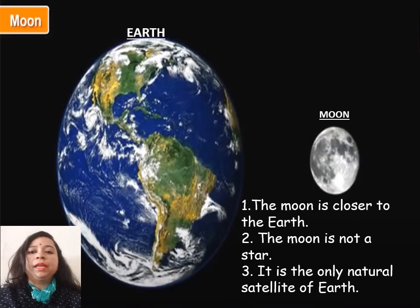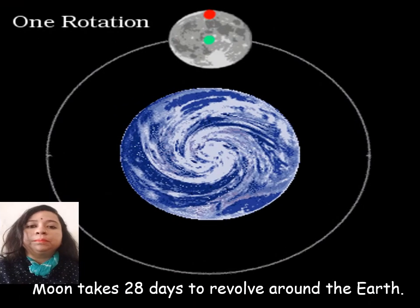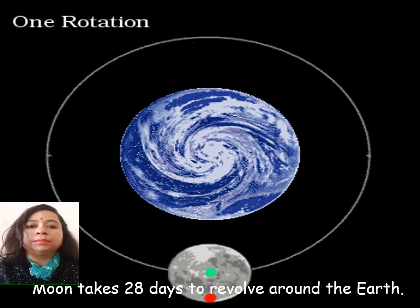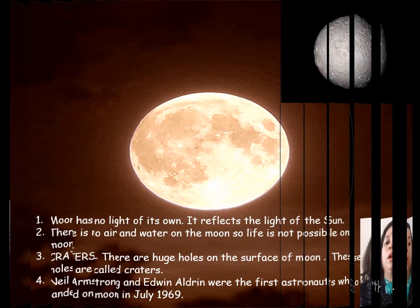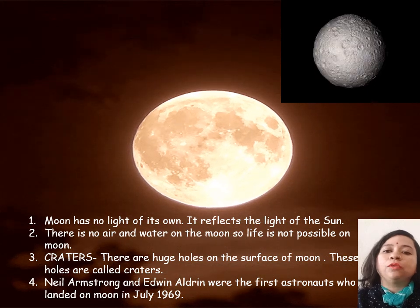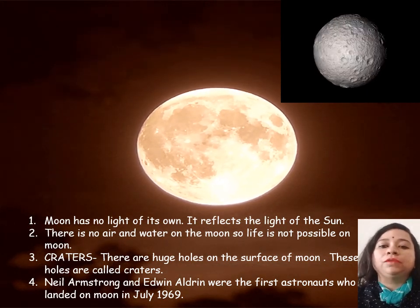The moon is closer to the earth. The moon is not a star. It is the only natural satellite of earth. Moon takes 28 days to revolve around the sun. Moon has no light of its own.